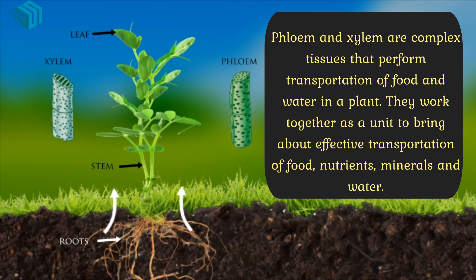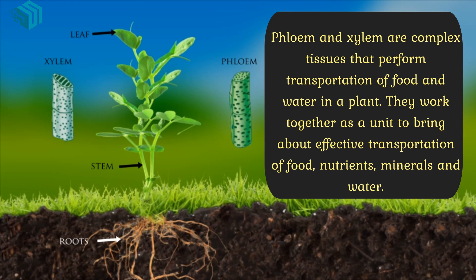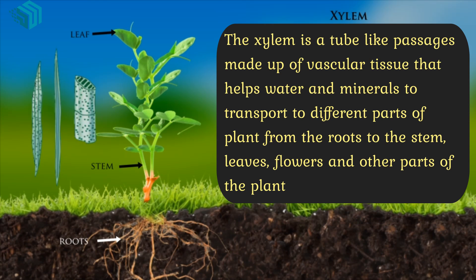They work together as a unit to bring about effective transportation of food, nutrients, minerals and water. The xylem is a tube-like passage made up of vascular tissues that helps water and minerals to transport to different parts of the plant — from roots to the stem, leaves, flowers and other parts of the plant.